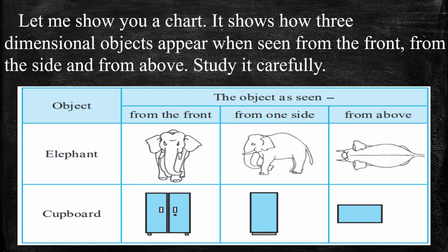The second object is a cupboard. From the front view, the cupboard looks like this. From one side, it looks like this. And from above, it looks like this.